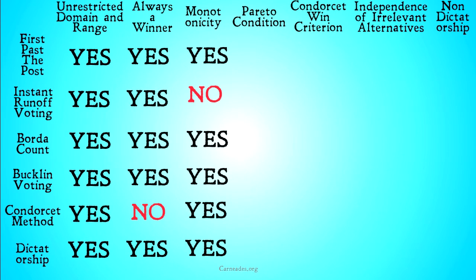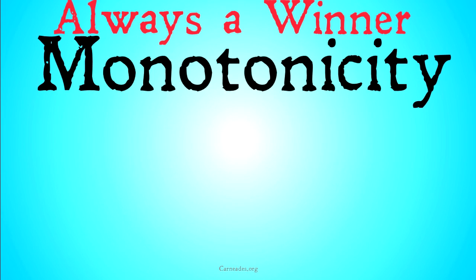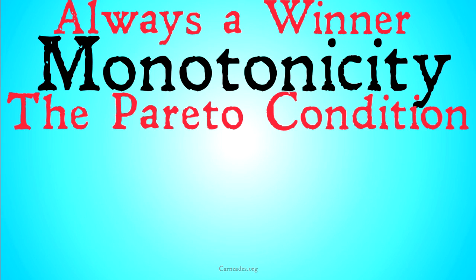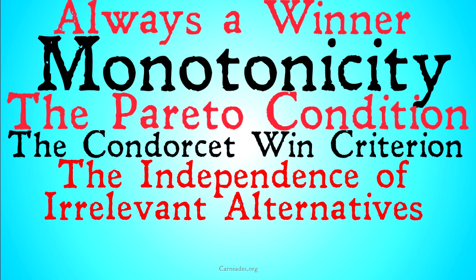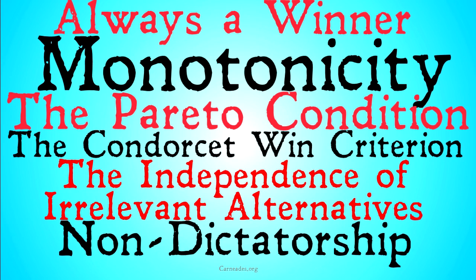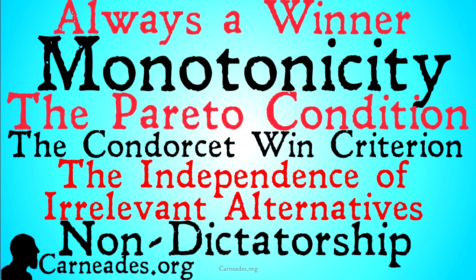But all of our other systems do satisfy monotonicity. We're not going to go into proving all of that — I just wanted to give the non-example because that's faster. There are proofs out there if you're curious, and if you really want me to do one, leave it in the comments below. But for now, that was monotonicity. Next up we're going to check out the Pareto condition, followed by the Condorcet win criteria, the independence of irrelevant alternatives, and non-dictatorship. Watch this video and more here at carneades.org, and stay skeptical, everybody.